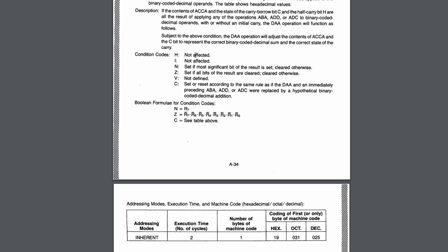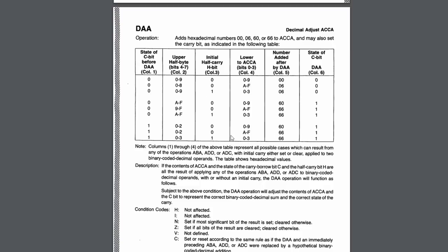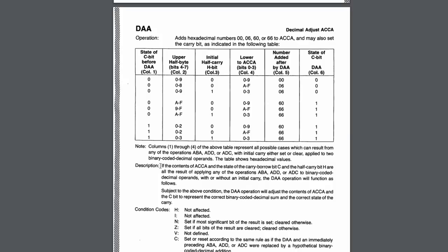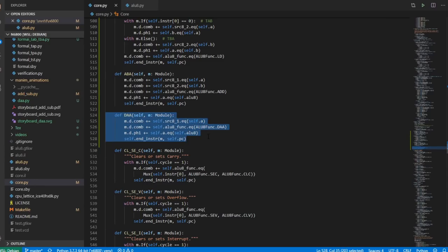That is pretty much what I've implemented, modulo some of the stricter form of this table. The programming manual also gave themselves an out for abuse of the DAA instruction: they basically said that if the contents are the result of applying ABA, ADD, or ADC to binary coded decimal operands with or without an initial carry, the DAA operation will function as follows. So if you apply DAA and it wasn't a result of adding two BCD operands, then all bets are off. That's the DAA instruction right there.